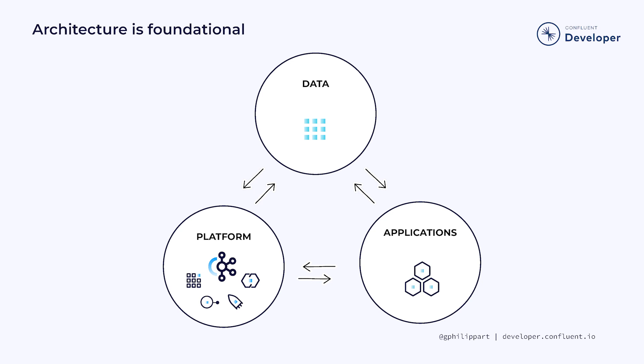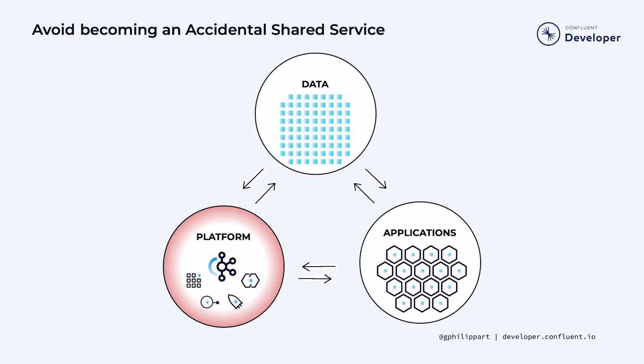When companies want to be successful, they usually put together a team to take care of their event streaming platform. This team does things like looking after it, helping people get on board, and troubleshooting issues. But if you don't have a dedicated platform team right now, don't worry. At the start of this journey, it's probably okay for your team to own the platform and support it for a while. But think about what would occur as more data and more applications are introduced — if you're not careful, it will get harder to keep everything running as smoothly as in the early days.